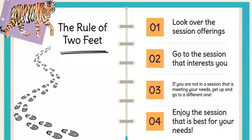A little more elaboration on the rule of two feet: you look at the sessions and you always have a backup plan. So if you're going to go to session A10 during session one and you think, 'Oh, this isn't what I thought it was going to be, this doesn't apply to me,' then you know you're going to go down to A27 because that was the other session you wanted to go to. If it's not meeting your needs, go to a session that does.